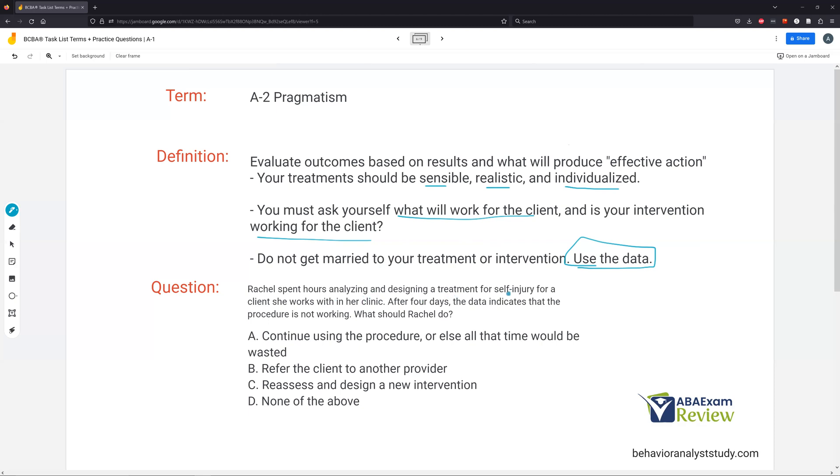Rachel spent hours analyzing and designing a treatment for self-injury for a client she works with in her clinic. After four days, the data indicates that the procedure is not working. What should Rachel do? Pretty demoralizing situation when this happens. She's spent hours on this. She's spent hours, and then four days later, it's not working. So what does she do? What is her course of action here? Well, she wants to be pragmatic, so what must she do? A, continue using the procedure, or else all that time will be wasted. Well, the time isn't wasted because we successfully ruled out something that's not going to work. B, refer to the client to another provider. No. If four days, she rules it doesn't work, well, she has other things she can go with. So C, reassess and design a new intervention would be pragmatic. That treatment's not working. What do I do? Let me individualize, reassess, design a new intervention, try again. So to be pragmatic, it's not working. Let me start and try something else. C.